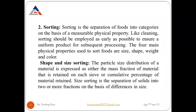The second step in preservation is sorting. Sorting is a process in which we separate food into different categories on the basis of measurable physical properties. Like cleaning, sorting should be employed as early as possible to ensure a uniform product for subsequent processing. The main physical properties used are food size, food weight, shape, and color. Size sorting is the separation of solids into two or more fractions on the basis of different sizes.